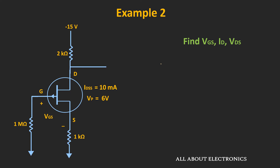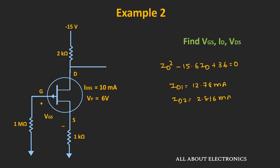Solving the quadratic gives two values: ID = 12.78 mA and ID = 2.816 mA. The first value exceeds IDSS = 10 mA, so it is rejected. Therefore, the drain current ID equals 2.816 mA. With this value known, we can find VGS and VDS.